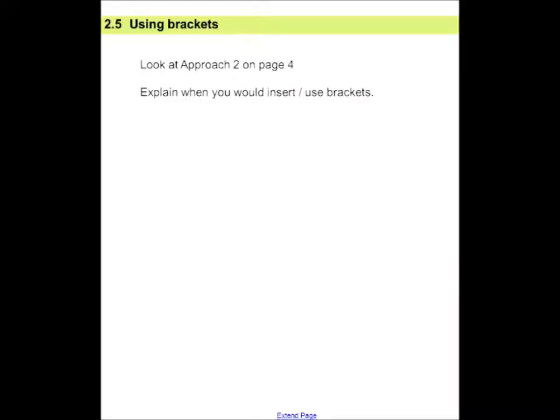Using brackets. If you go back to approach 2 on page 4, you had to explain when you would use or insert brackets. We insert brackets just to help us when we're doing our calculations using the laws of BODMAS. So if there are no brackets or of, I would go and look for multiplication and or division. Put brackets around those to calculate. And then after I've done those calculations, I would then go and look for addition and subtraction. Put brackets around those calculations. And then I would do the calculations on that.